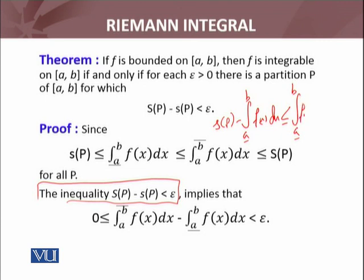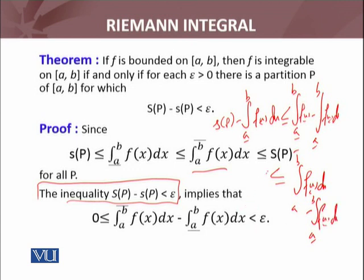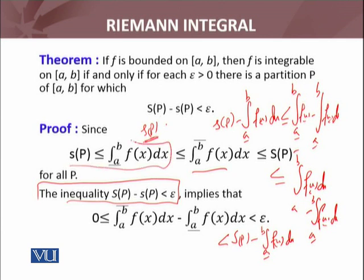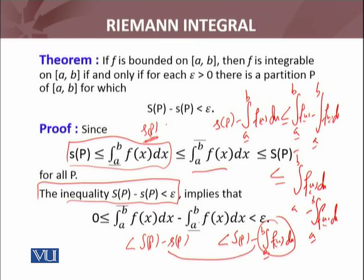We have the upper integral of f(x) dx minus the lower integral of f(x) dx, and we have U(P) — the upper sum — minus the lower integral from a to b of f(x) dx. Since the lower integral is the supremum, any lower sum is always less than or equal to that lower integral. So if I replace the lower integral by any lower sum S(P), the expression becomes U(P) minus S(P), which is greater, giving us the upper integral minus lower integral less than U(P) minus S(P).